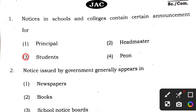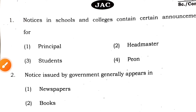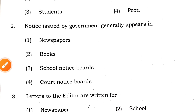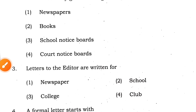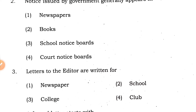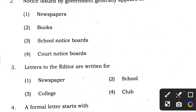Question 2: notices issued by government generally appear in — options are newspapers, books, school notice boards, or court notice boards. Obviously, any notice that the government issues appears in the newspaper, so the answer to question 2 is option 1.